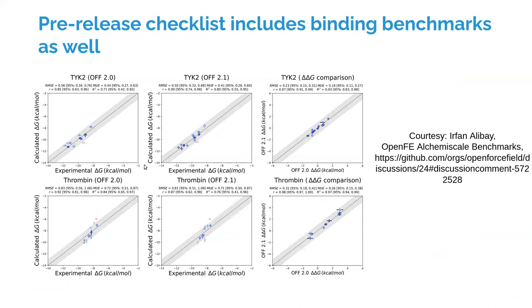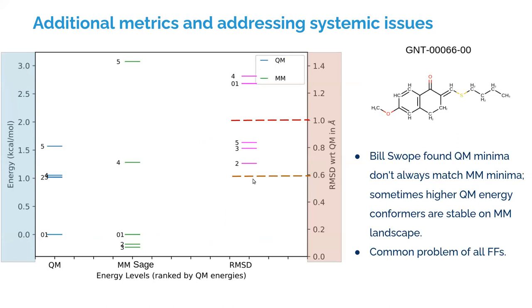Our pre-release checklist also includes binding free energy benchmarks. Luckily this time our force field coincided with OpenFE's alchemical scale release — a huge thanks to Irfan Alibay for extending help to test the new iteration of the force field. So is everything as good as it looks, and what are some other measures that can help bring out any systemic discrepancies?